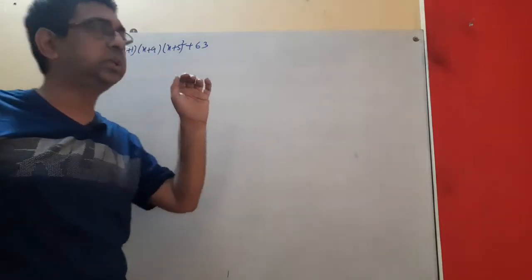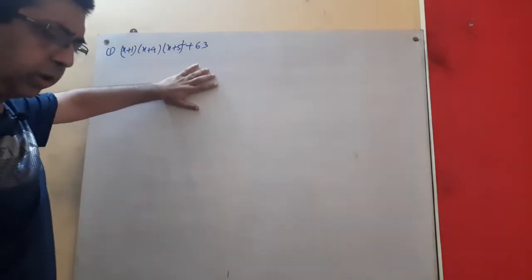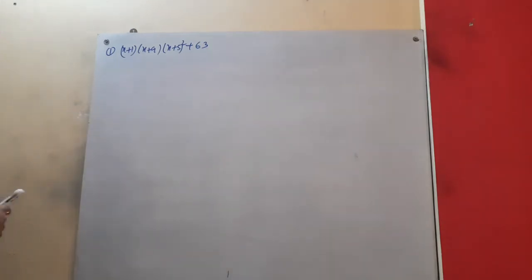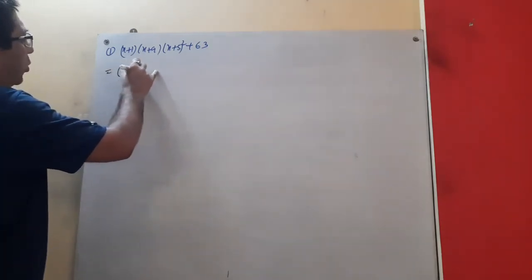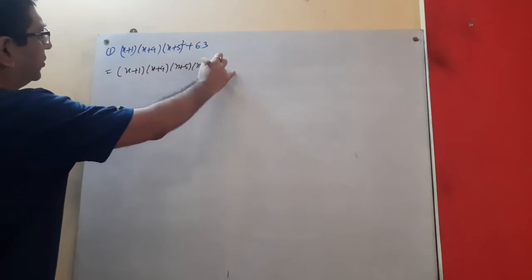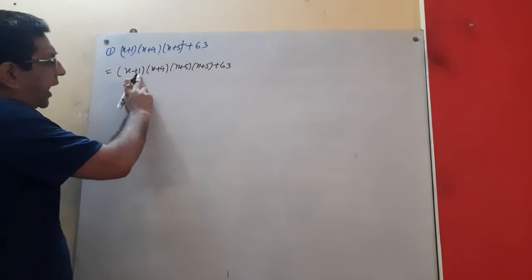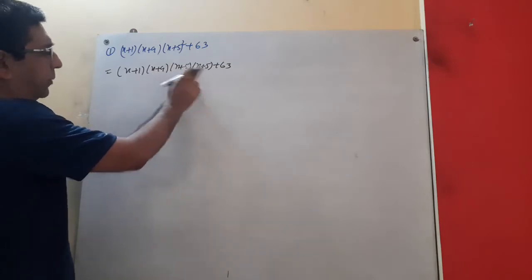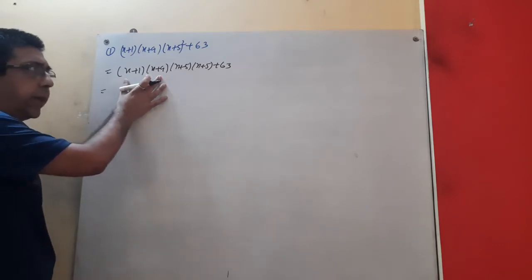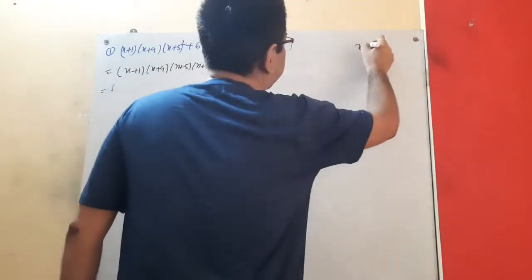This is a special type of factorization. We haven't done this type before. We can do it this way: x+1 paired with x+9, and x+5 paired with x+5, giving 63. Concentrate on the constants — 9 plus 1 is 10, and 5 plus 5 is 10. We'll multiply these two pairs and keep each in a bracket.